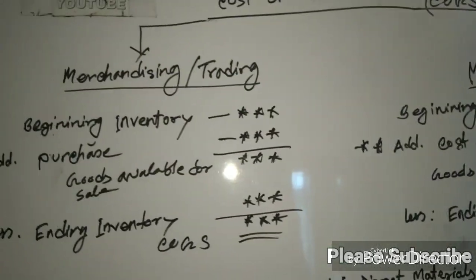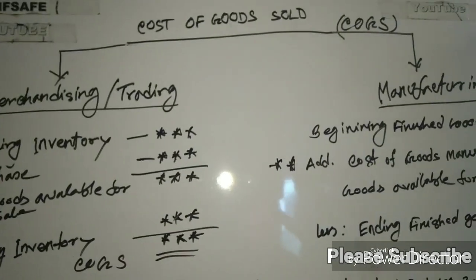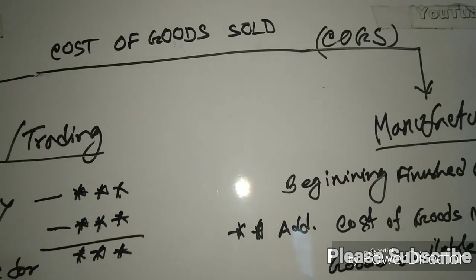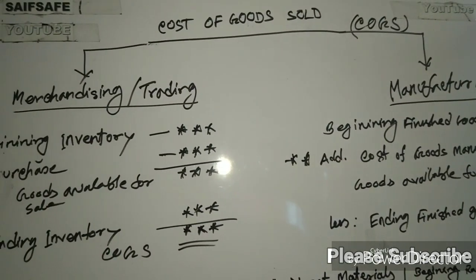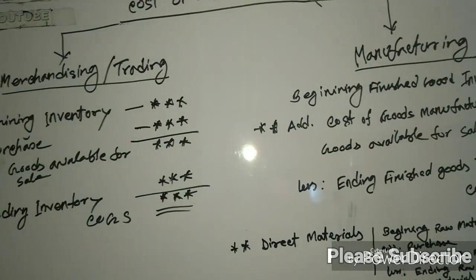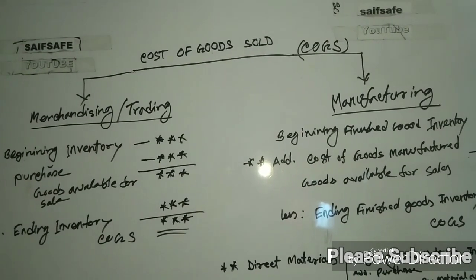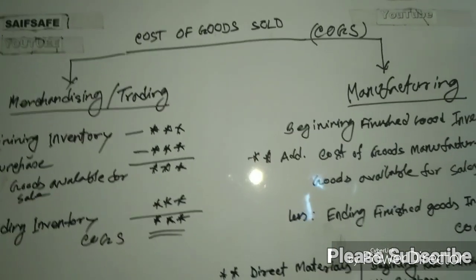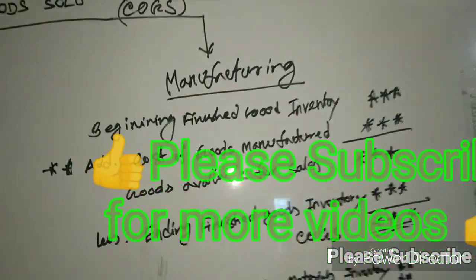I am talking about cost of goods sold. A lot of professionals are already familiar with cost of goods sold, and manufacturing is the same thing that we have to do with the factory.